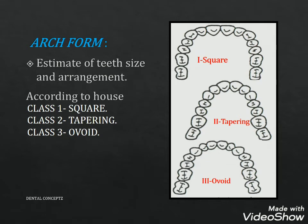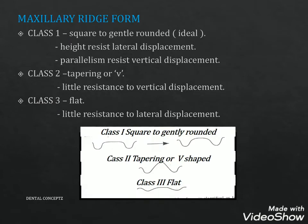Arch form provides an estimation of teeth size and arrangement. The opposing arch may not have the same form, so one can anticipate some difficulty in teeth arrangement. According to House, the arch form can be square, tapering or ovoid. For maxillary ridge form, Class 1 is square to gently rounded — the ideal ridge form providing resistance against lateral and vertical displacement. Class 2 is tapering or V-shaped ridge with little resistance to vertical displacement. Class 3 is flat ridges with little resistance to lateral displacement.